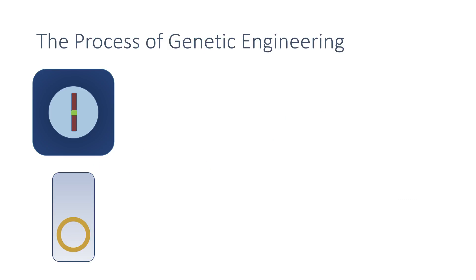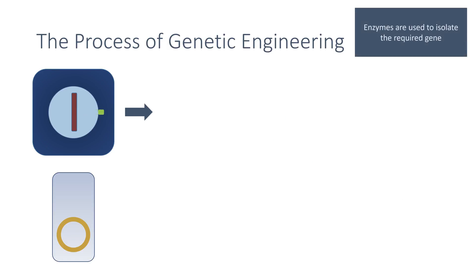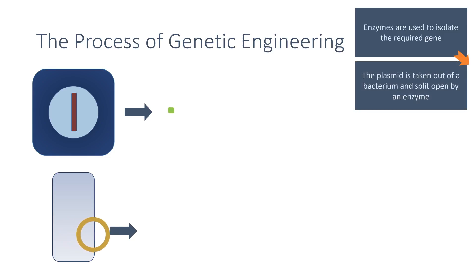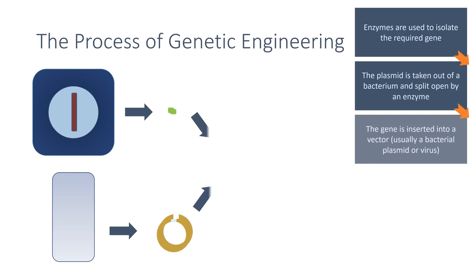To genetically engineer, you first need to isolate the required gene using enzymes. Scientists then remove a plasmid from a bacterium, which is then split apart, allowing the gene to be inserted into the vector.